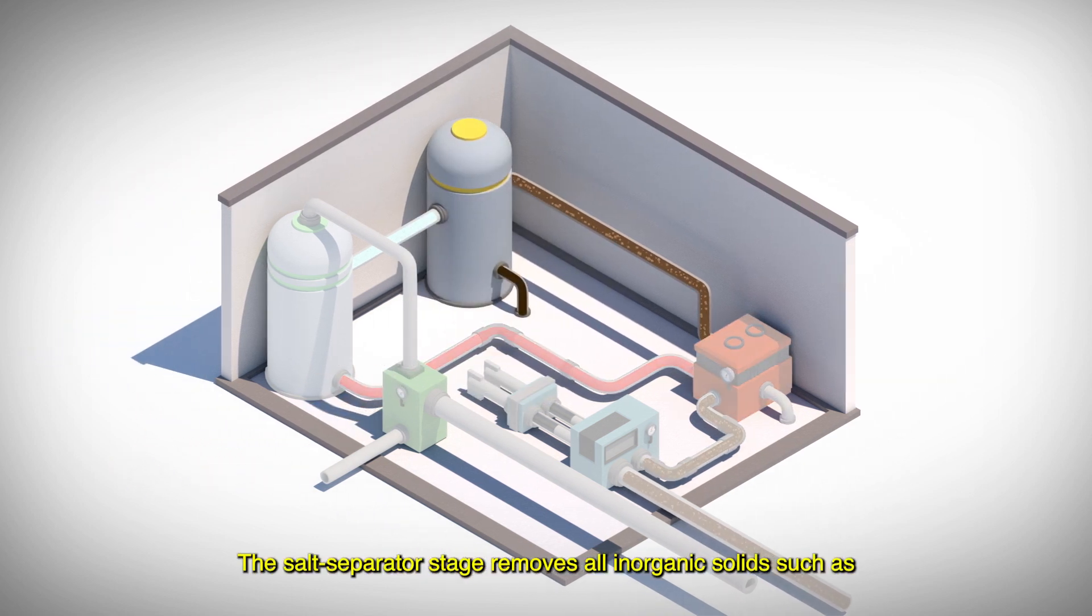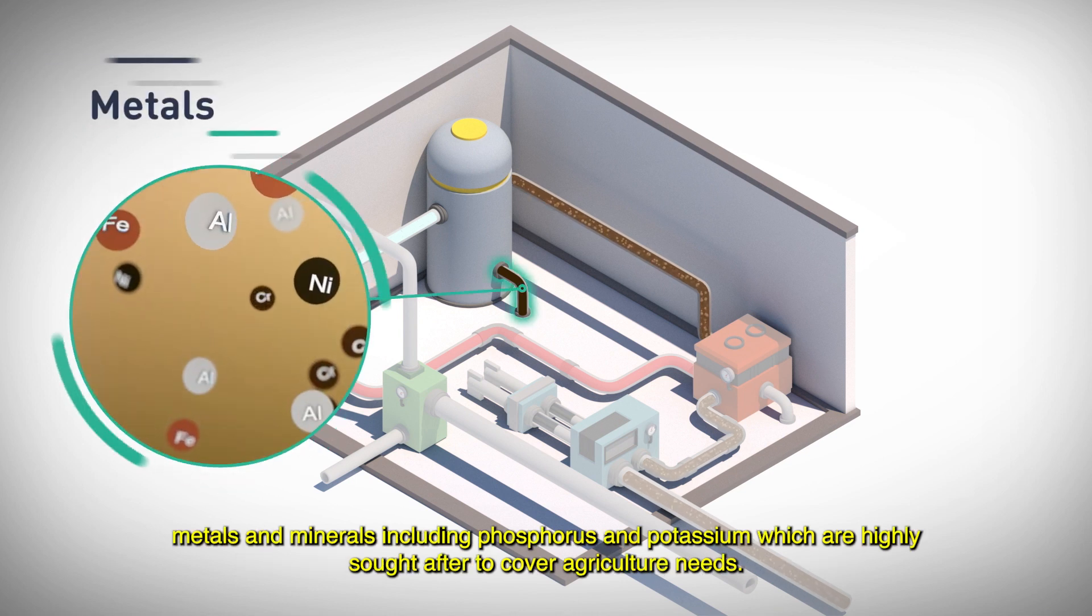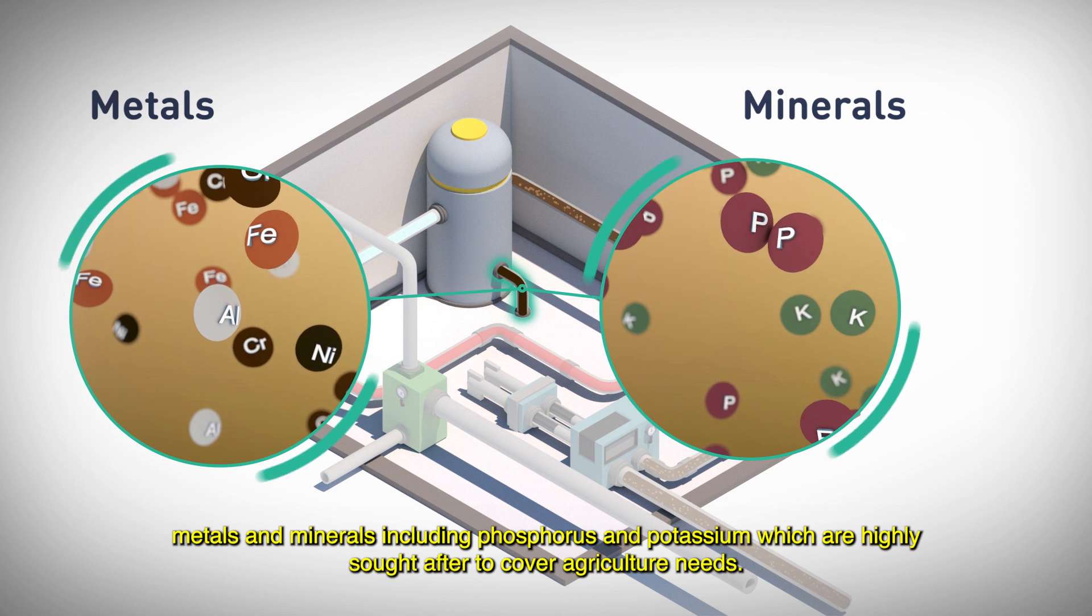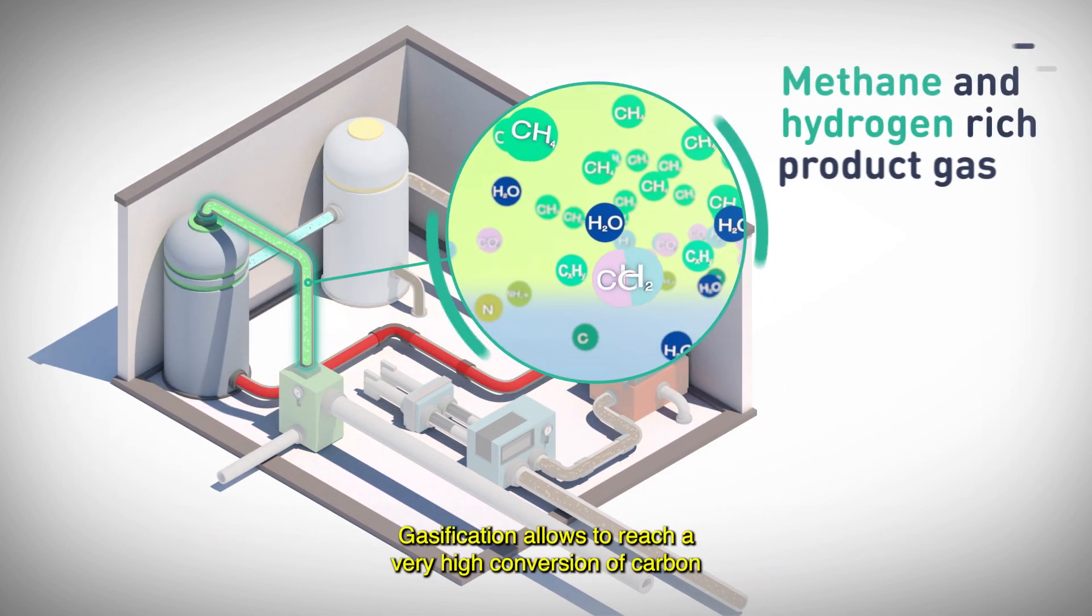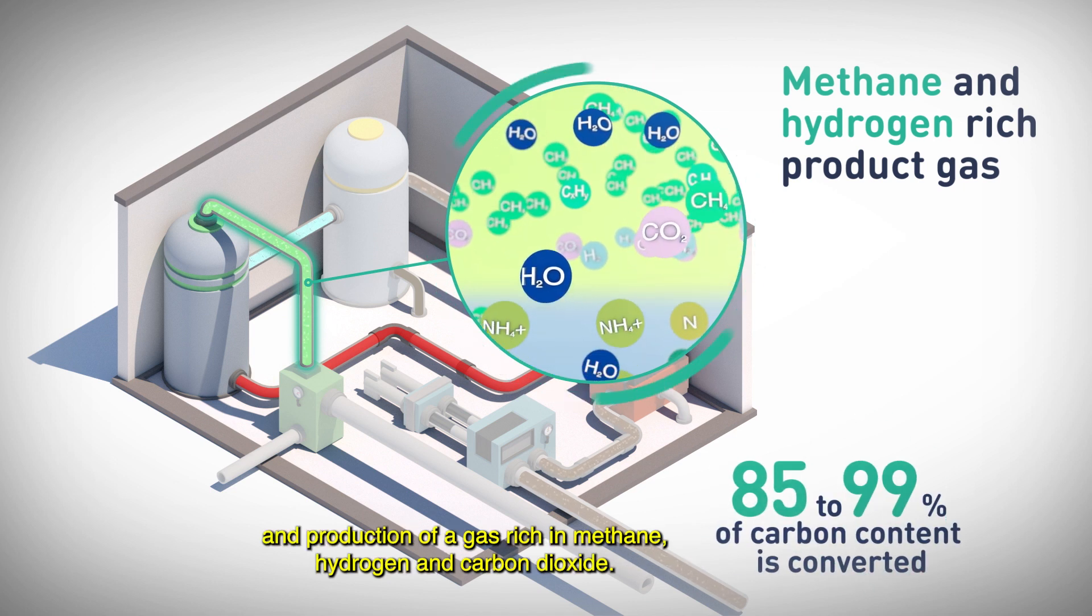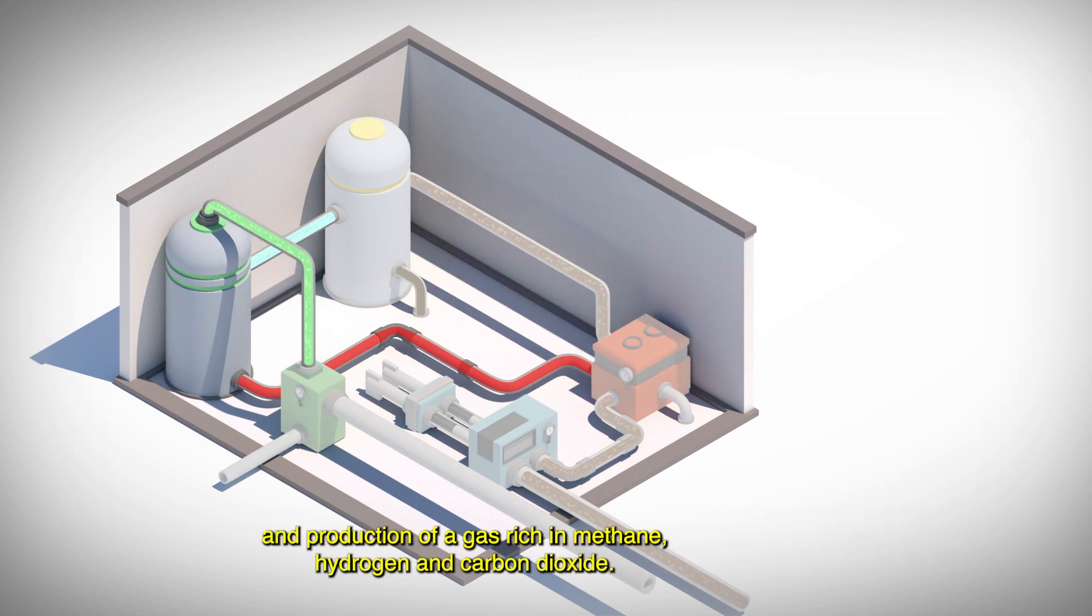The salt separator stage removes all inorganic solids such as metals and minerals, including phosphorus and potassium which are highly sought after to cover agriculture needs. Gasification allows reaching very high conversion of carbon and production of gas rich in methane, hydrogen, and carbon dioxide.